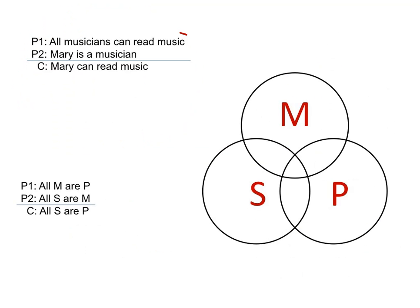So here's our argument. The first premise is all musicians can read music. Premise two, Mary is a musician. And our conclusion is Mary can read music.